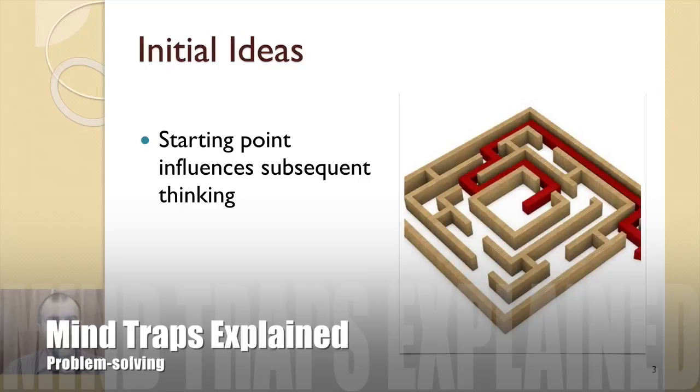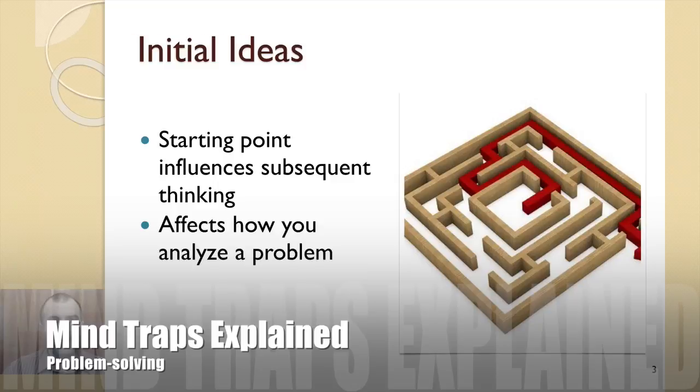The initial ideas trap is most likely to affect the second and fourth steps of the problem-solving model when you analyze a problem and when you choose what appears to be the best solution. Initial ideas about the nature of the problem and the best way to address it can color your thinking at these steps and prevent you from engaging in honest, thorough analysis of problems and solutions. It is important to avoid this mind trap because the roots of a problem are often deep and if the problem and solutions are not analyzed properly, you could end up with less effective solutions.